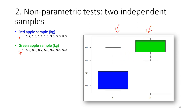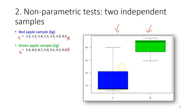After organizing and summarizing the data, judging from the summary, do you think there is a significant difference between these two types of apple? It seems like the green apple weighs more than the red apple. However, as you can see from the box plot, the data seems skewed to one side, so it is very likely our data is not normally distributed.